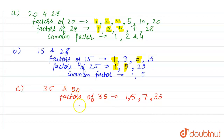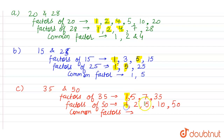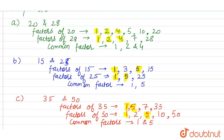Factors of 50: 1, 2, 5, 10 × 5 = 50, 25 × 2 = 50, and 50 itself. Here it starts repeating, so 50 is the last factor. Now the common factors of 35 and 50: 1 is a common factor, and 5 is also a common factor. So the common factors of 35 and 50 are 1 and 5.